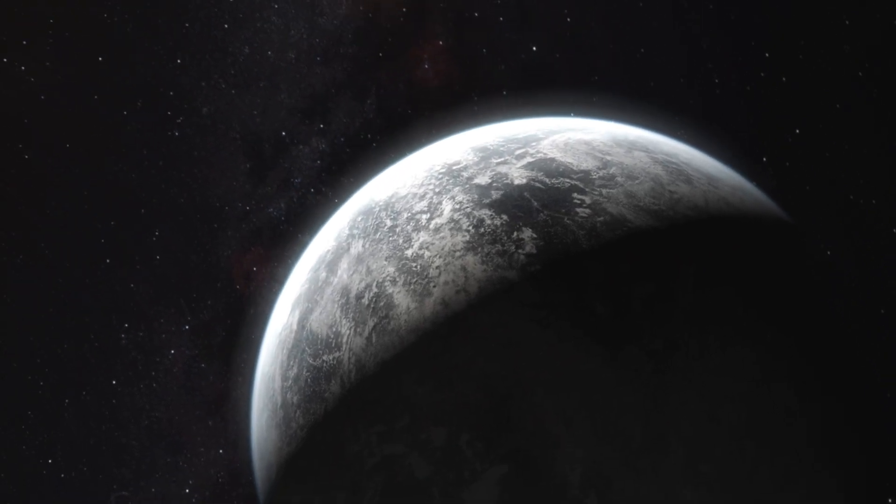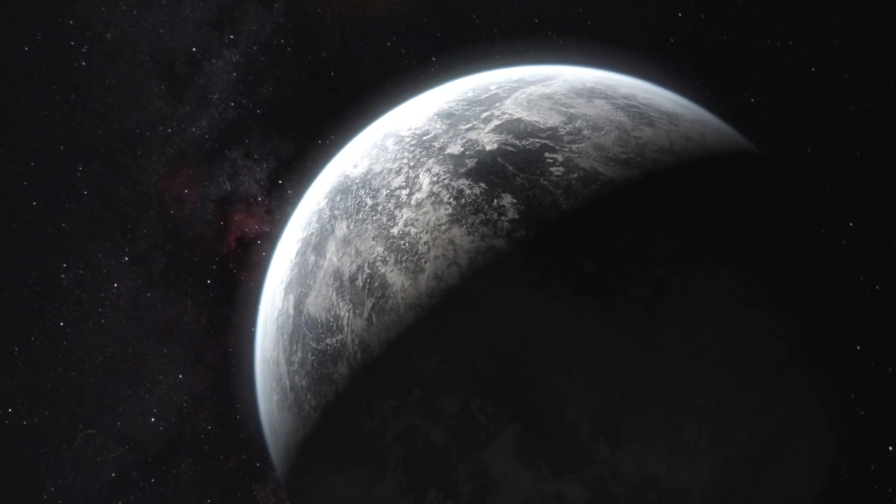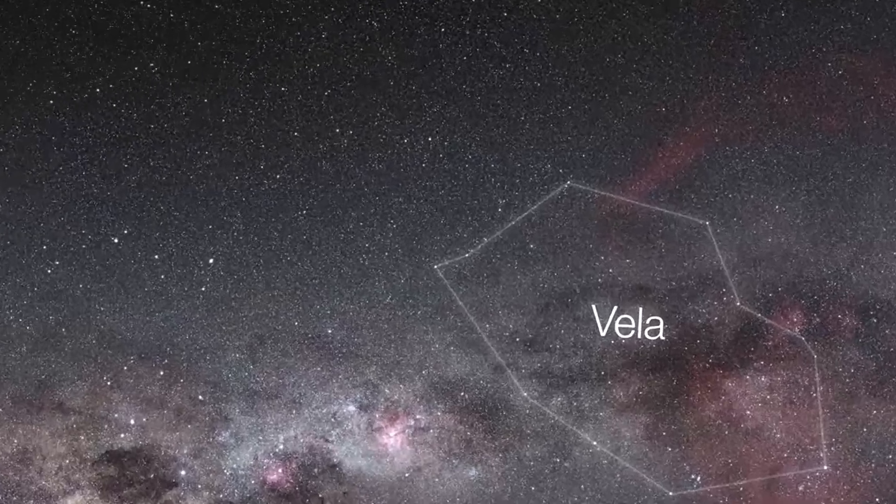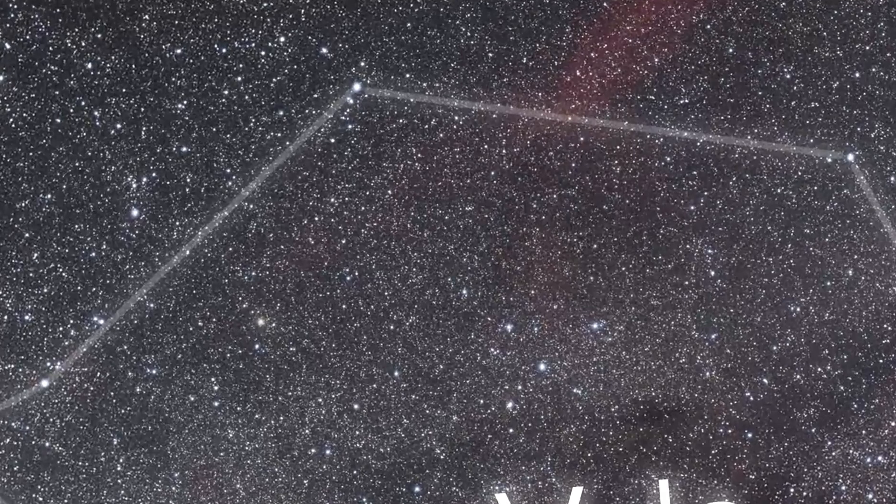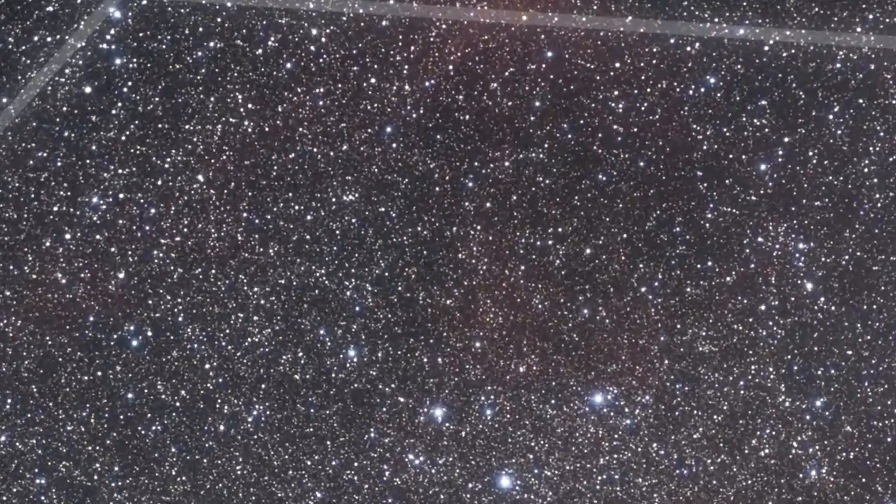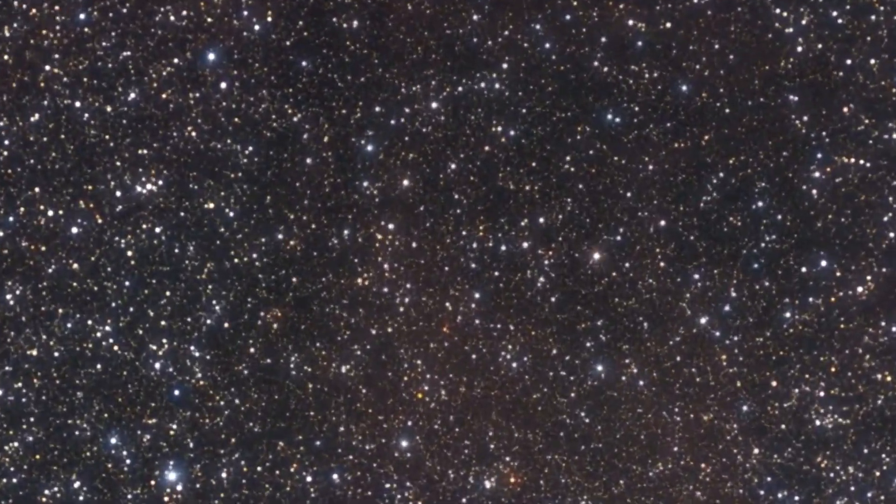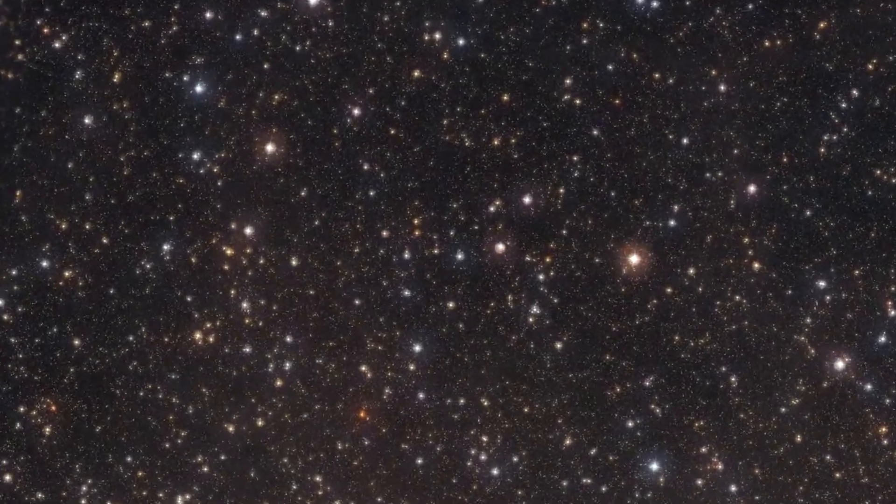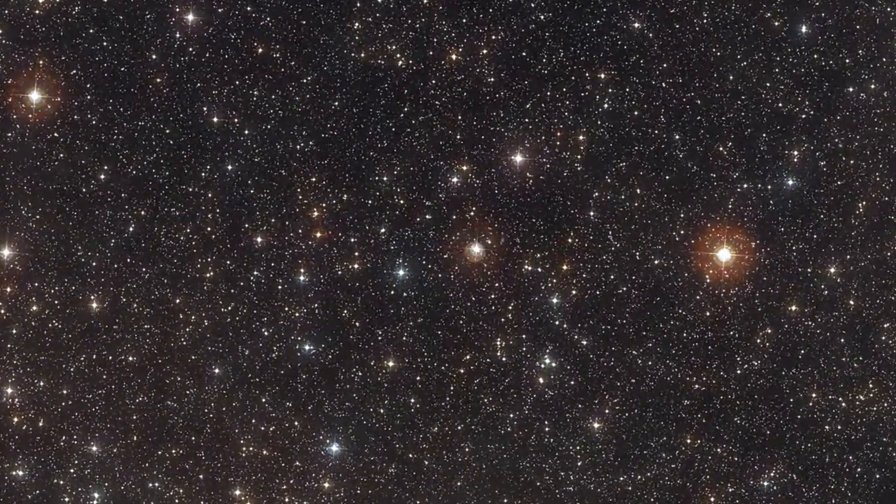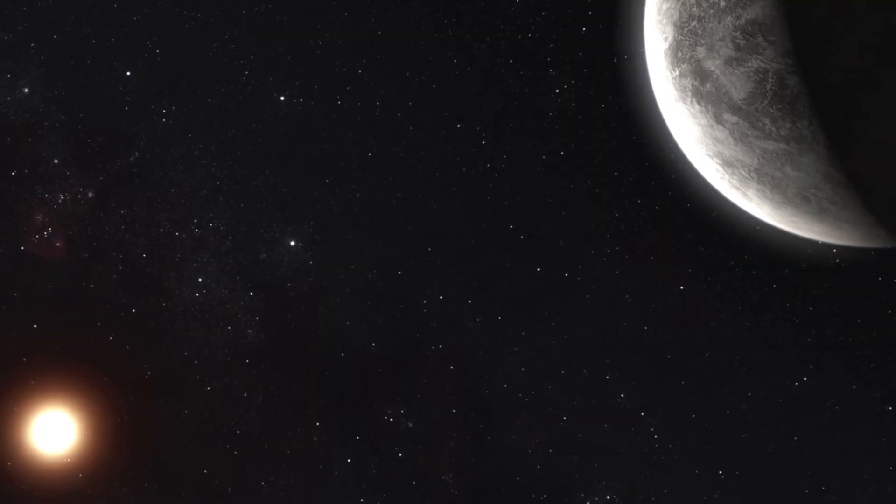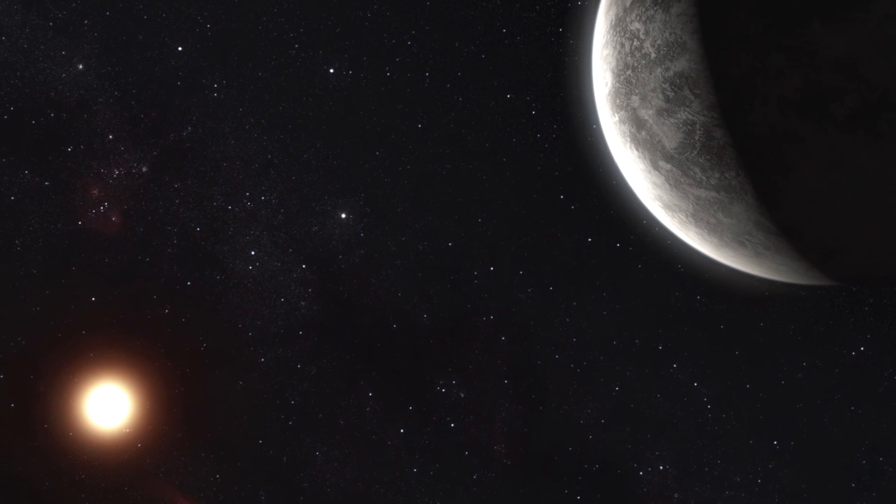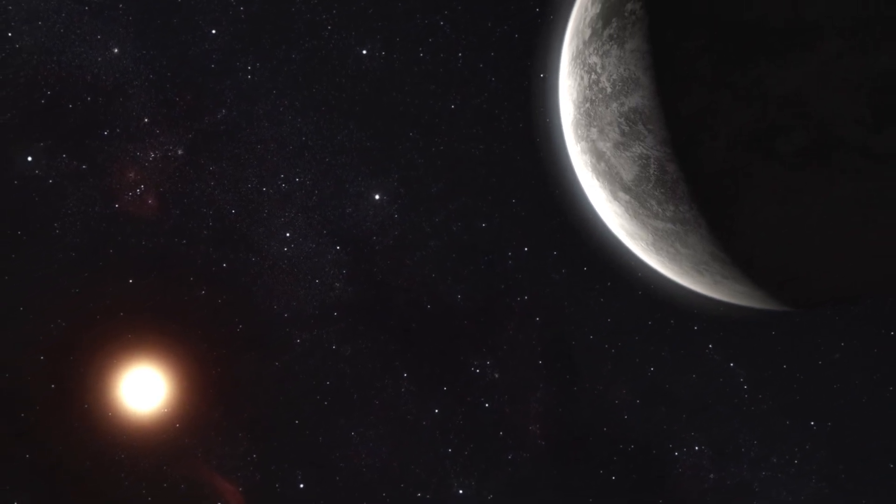If the Viking and Venera missions were impressive, the Voyager program was nothing short of epic. Launched in 1977, Voyager 1 and Voyager 2 rewrote the book on the outer planets. Voyager 1 captured stunning details of Jupiter and Saturn, including their moons and ring systems. Voyager 2 went even further, visiting Uranus and Neptune, the only spacecraft to ever do so.